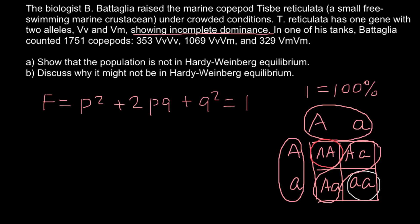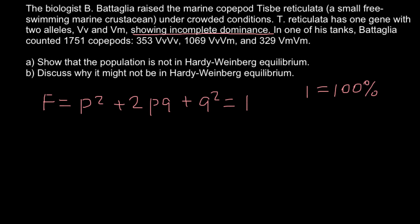In our Hardy-Weinberg formula, p-squared stands for the homozygous dominant genotype. In our problem, we have 353 individuals with genotype VV. We have 1,069 that are heterozygous, with one allele V and one allele M. And we also have genotype MM with 329 individuals. These are absolute numbers, not frequencies, so we need to find frequencies.